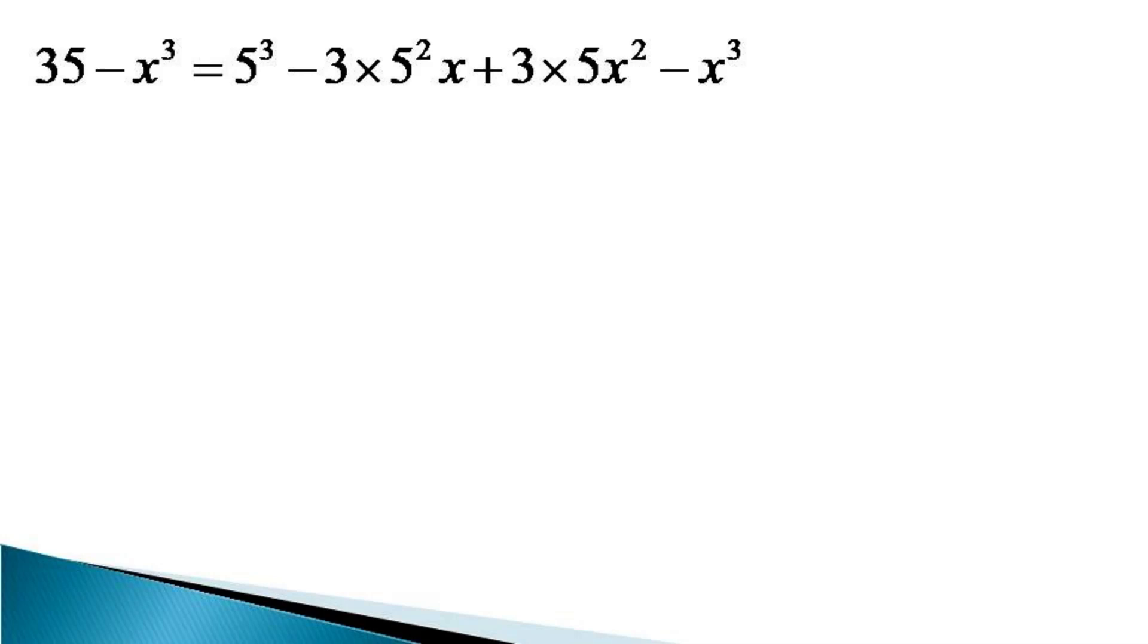The term minus x cube occurs on both sides of the equal sign and they get cancelled by each other. And thus, we get another equivalent equation as 35 is equal to 125 minus 75x plus 15x square.